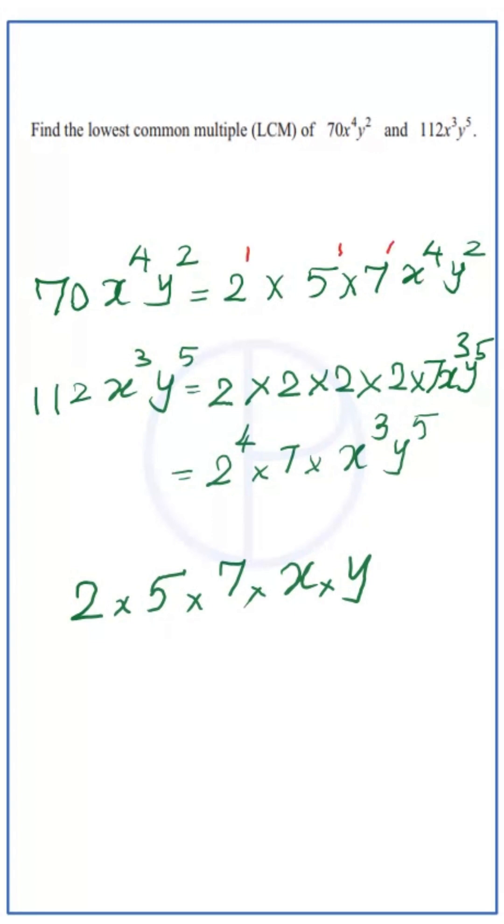For 2, the highest power is 4. For 5, in the first expression the power is 1, and in the second expression there is no 5 term, so we can write it as 5^0, which is 1. So the highest power for 5 is 1.